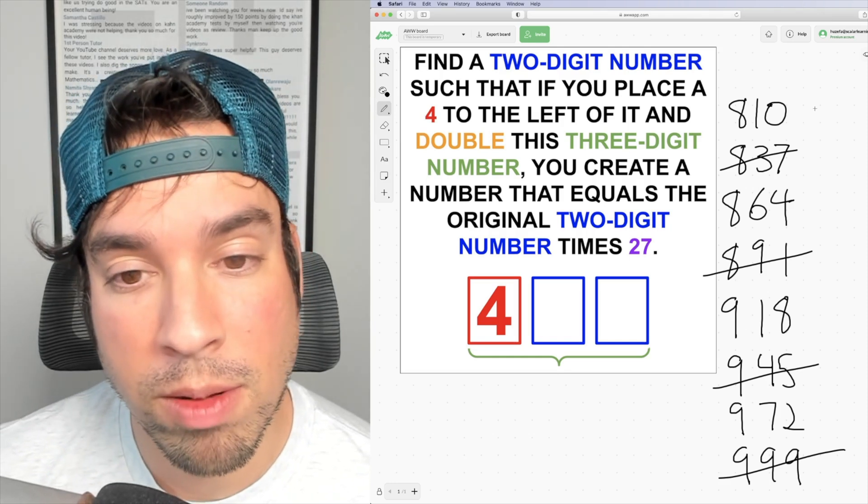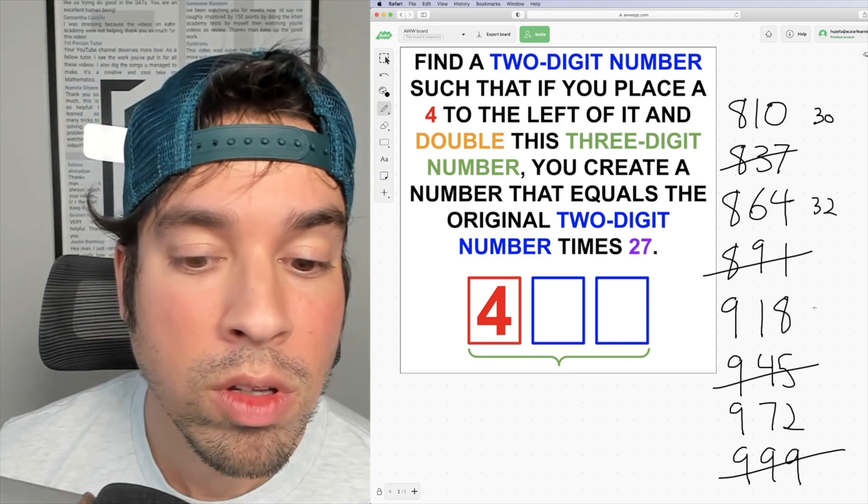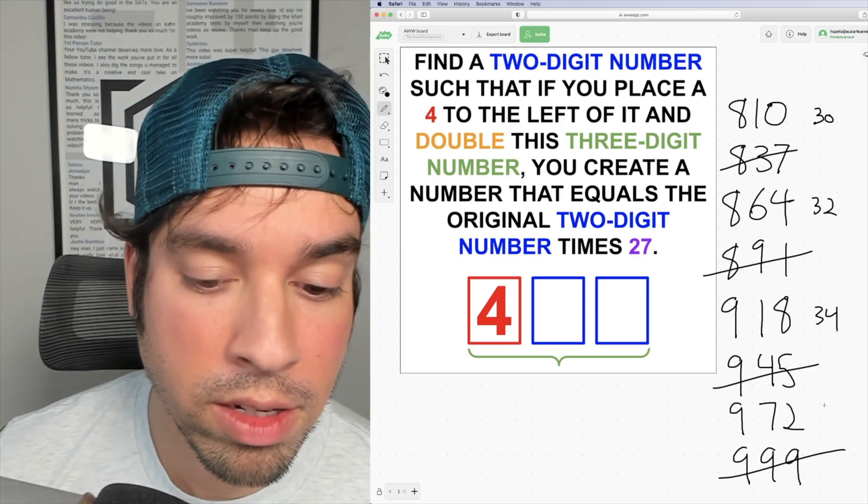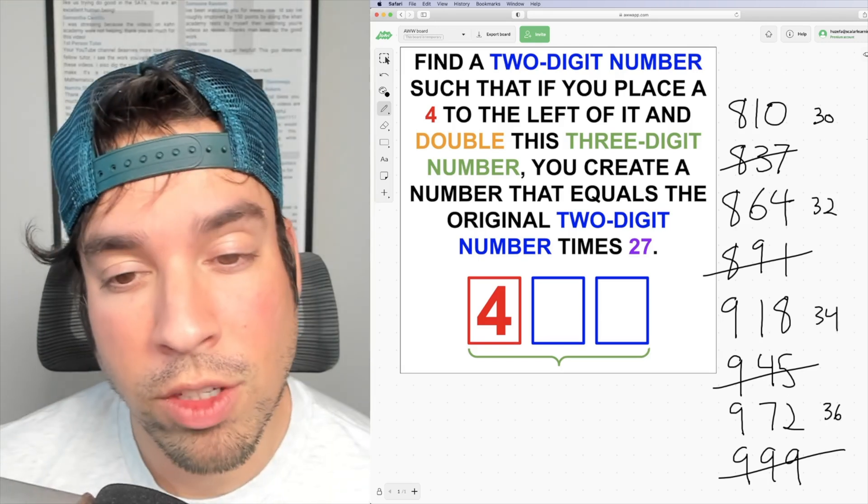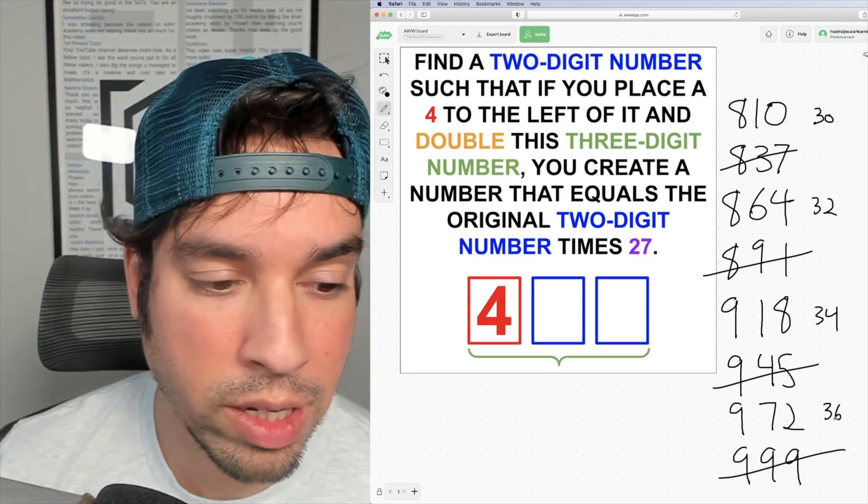And just so it's clear, this is 27 times 30, 32, 34, and 36. So my possible answers are 30, 32, 34, and 36.